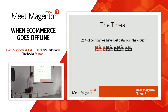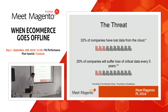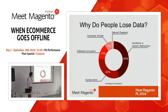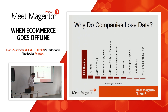To show you the scale of the threat: a survey found that 32% of companies said they have lost data from the cloud. Other research tells us that 20% of companies will suffer loss of critical data every five years — so it can happen to about one fifth of the people in this room. When it comes to companies specifically, almost 70% of data loss cases were caused by hacking, which is the biggest single threat, and as we said, we cannot fully protect ourselves against it.